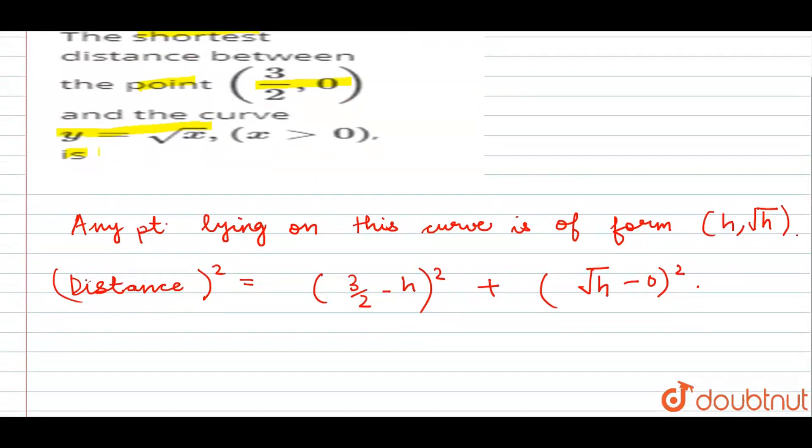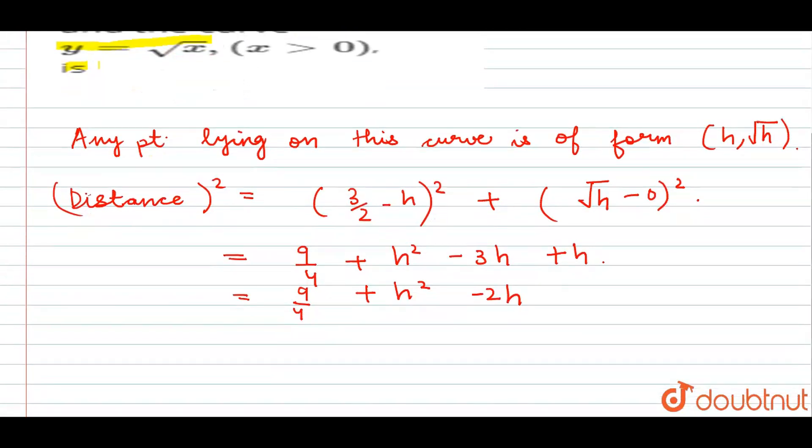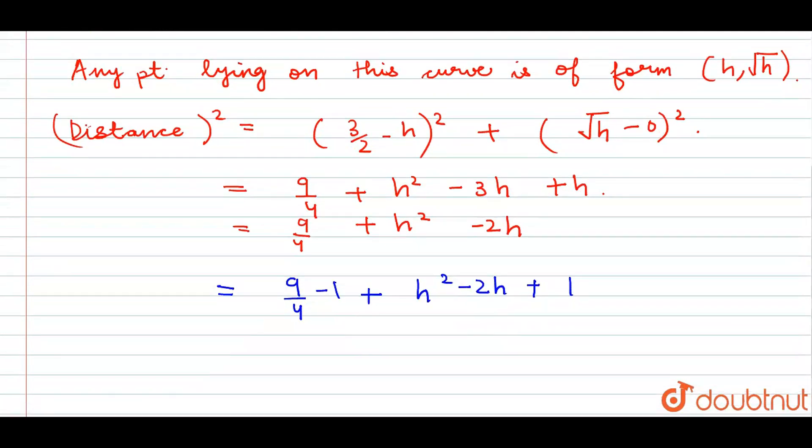So it is (3/2 - h)² plus (√h - 0)². As we move ahead, we open the square and get 9/4 + h² - 3h + h, which gives us 9/4 + h² - 2h. I am going to add 1 and subtract 1. Then what happens is I get 9/4 - 1, which is 5/4, plus (h - 1)².